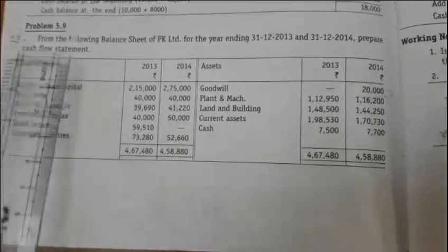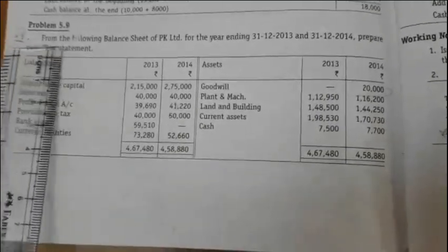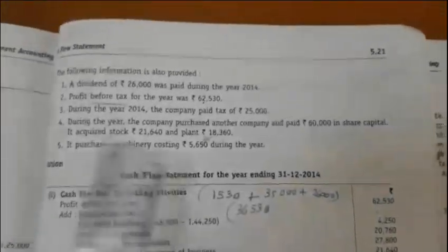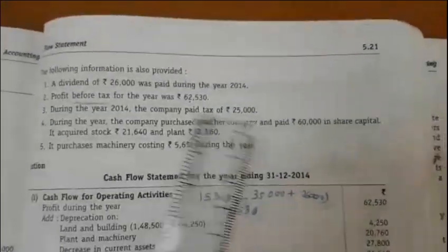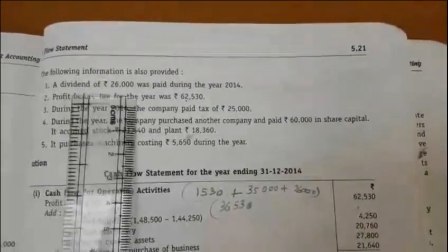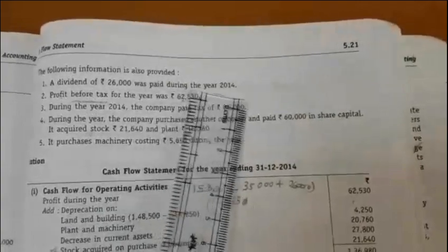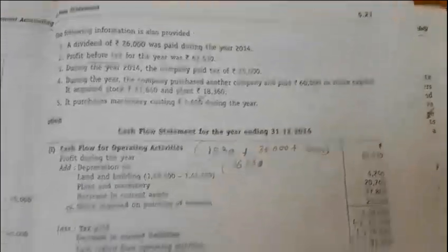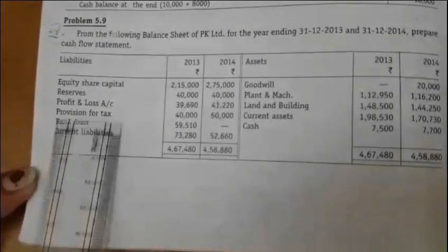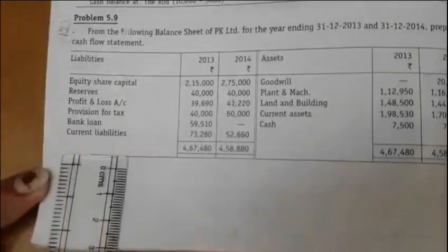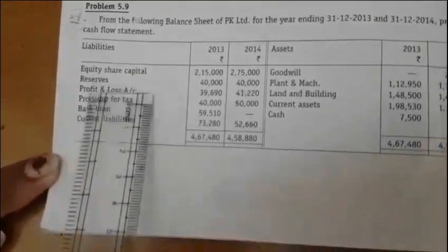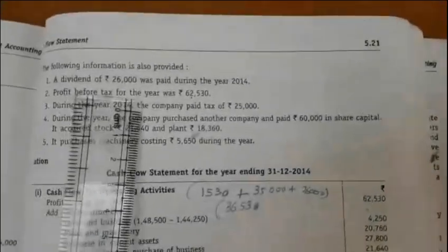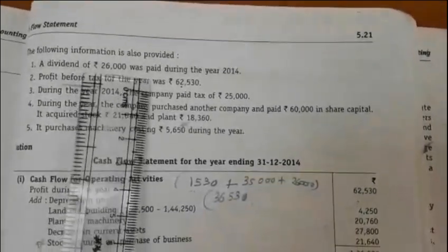Now I will be working out problem number 12. We will move on to the adjustments. The first adjustment is a dividend of Rs.26,000 was paid during the year 2014. We will look into the liability side of the balance sheet to check whether proposed dividend is given or not. It is not given, so this dividend of Rs.26,000 will appear twice.